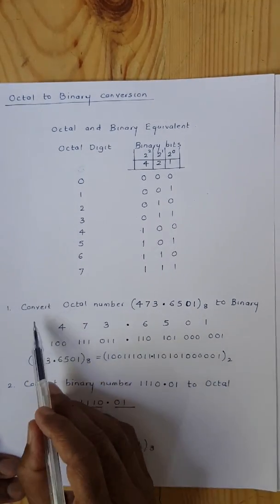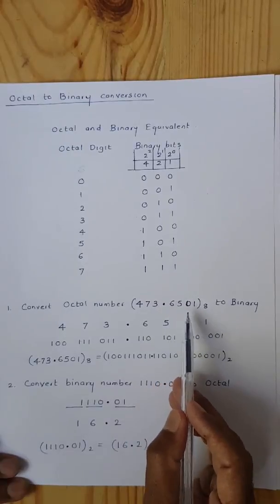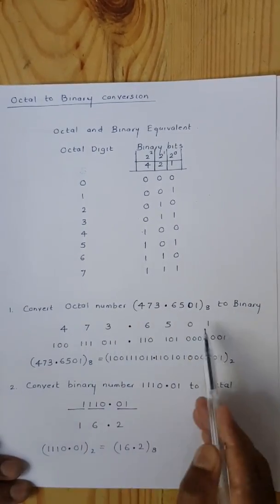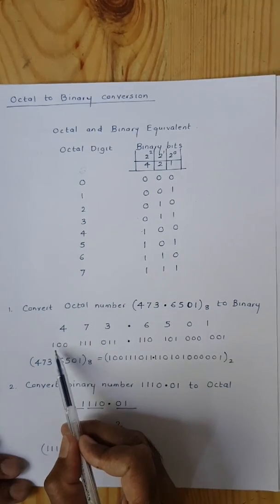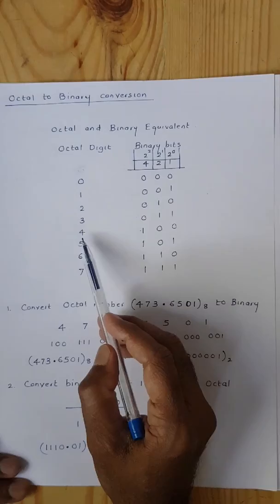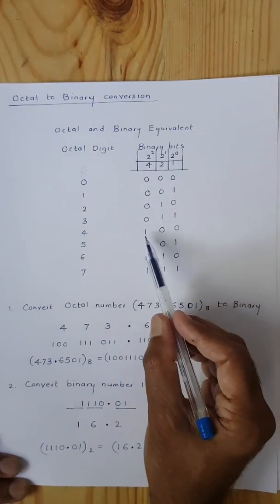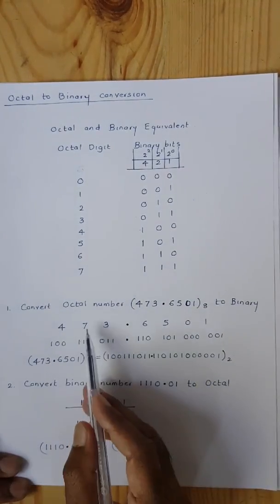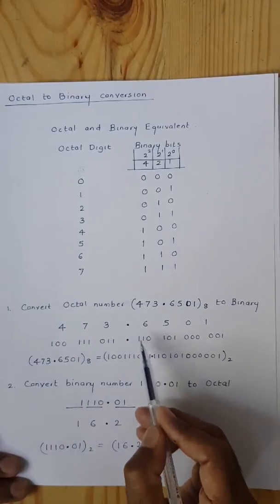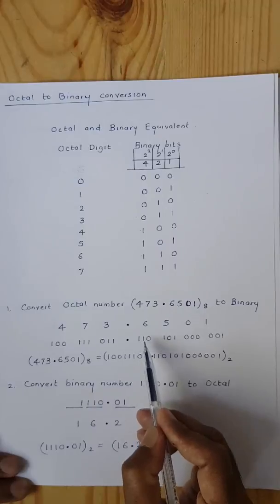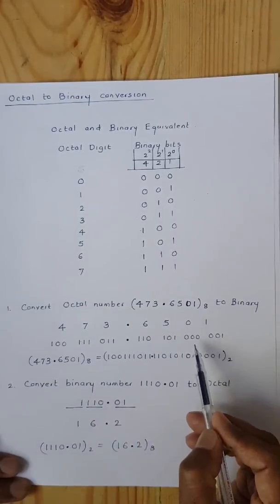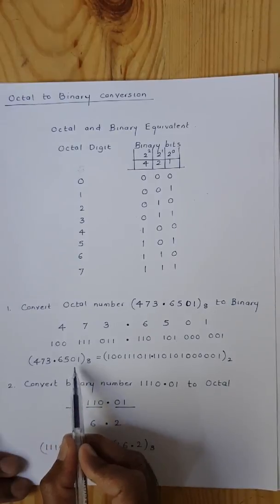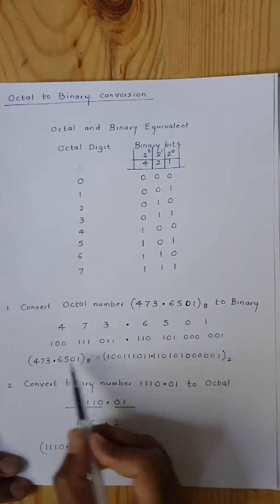Now we take the example: convert octal number 473.6501 to binary. We write each octal digit and its 3-bit binary equivalent. 4 is represented as 1, 0, 0. 7 is 1, 1, 1. 3 is 0, 1, 1. After the decimal point: 6 is 1, 1, 0. 5 is 1, 0, 1. 0 is 0, 0, 0. 1 is 0, 0, 1. So the binary representation of octal 473.6501 is 100 111 011 . 110 101 000 001.